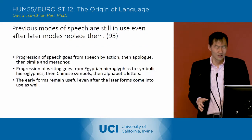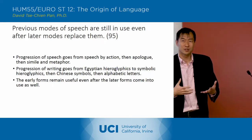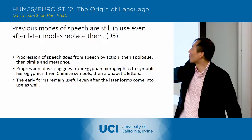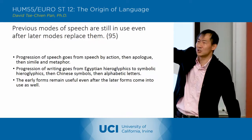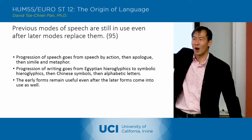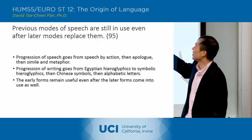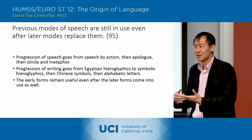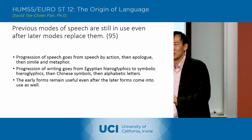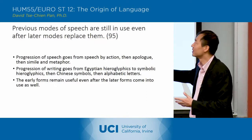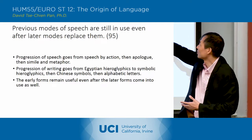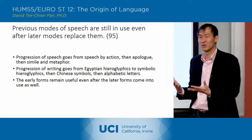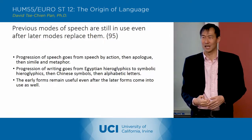He then emphasizes that these previous modes of speech are still in use. It's not as if once you've started with the hieroglyphics and moved toward symbolic hieroglyphics, then Chinese symbols, then alphabetic letters, that the earlier ones are no longer useful. No, they're still used. They still have importance and, in fact, often have the most effective kind of representational value because of their imagistic character. So he's laying out this progression in terms of speech — from speech by action, then epilogue, then simile and metaphor — even though all these types remain in use even when you've progressed to the next stage.